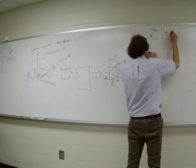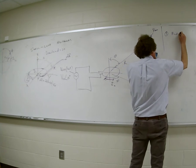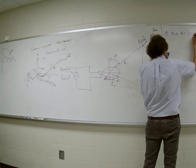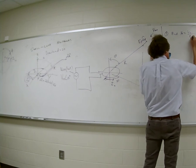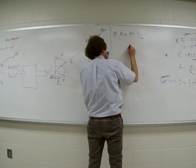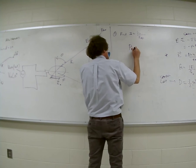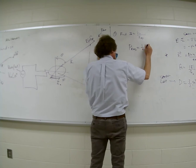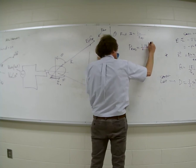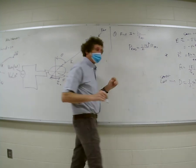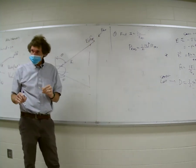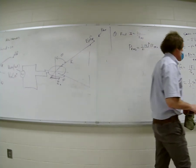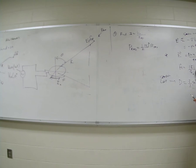First step: find I₀ — that's simply V₀ over R_radiation. Second step: find total radiated power, which is one-half times |I₀|² times R_rad. That's the second step.